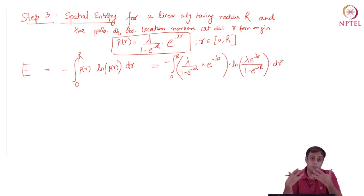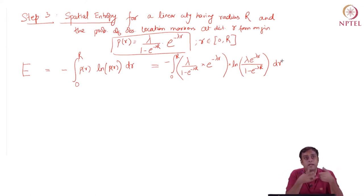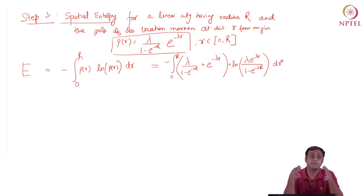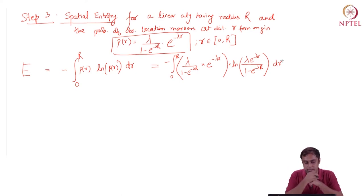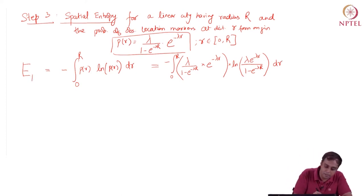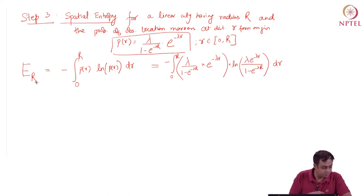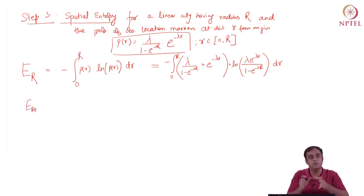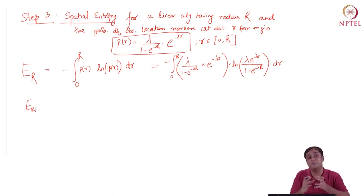This entropy is a function of lambda and, more critically, of the size of the city — the maximum radius R. We call it E(R), or E sub R. It has a complicated mathematical formulation but a very interesting physical interpretation, which we will now examine.